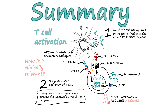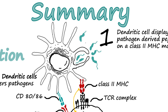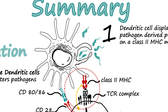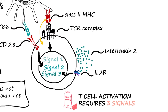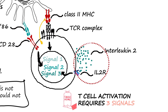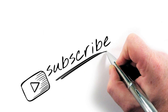In summary, T cell activation requires three signals: Signal 1 from TCR-MHC interaction, Signal 2 from CD80/CD86-CD28 interaction, and Signal 3 from IL-2 autocrine signaling. Don't forget to like, share, and subscribe to the channel. See you in the next video.